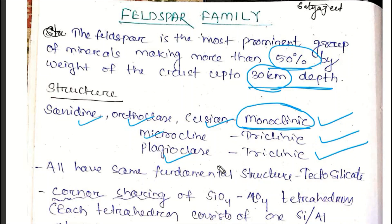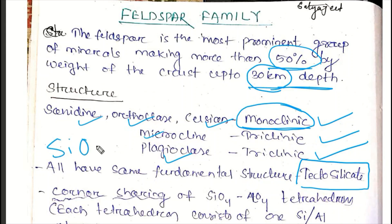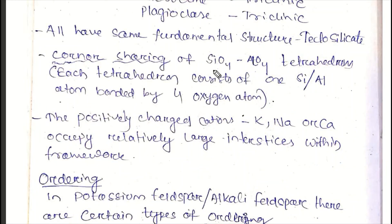In the feldspar family, all minerals have a tectosilicate structure. What is tectosilicate? We have SiO4 tetrahedra where all four oxygens are shared. So we have SiO4 or AlO4 tetrahedra. The tetrahedra has four corners of oxygen sharing, so we have tectosilicate.